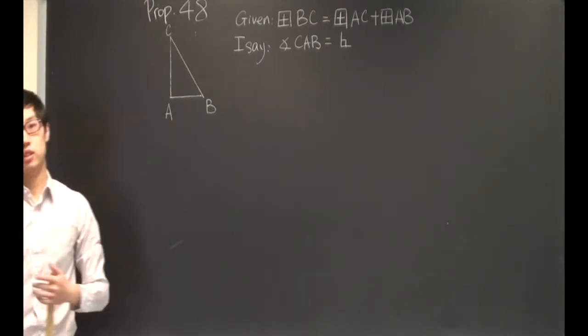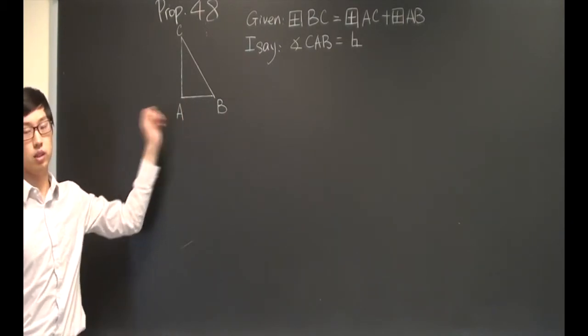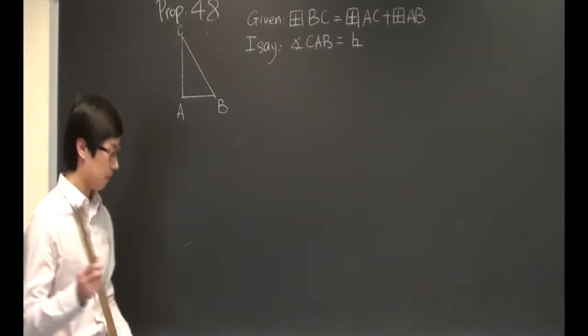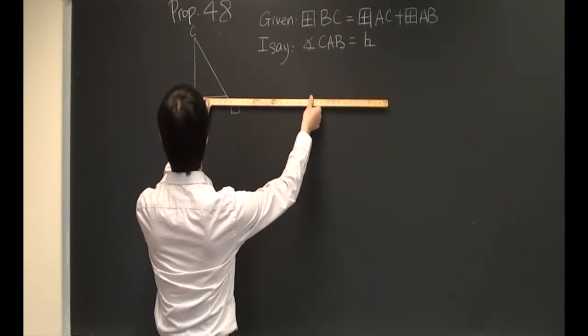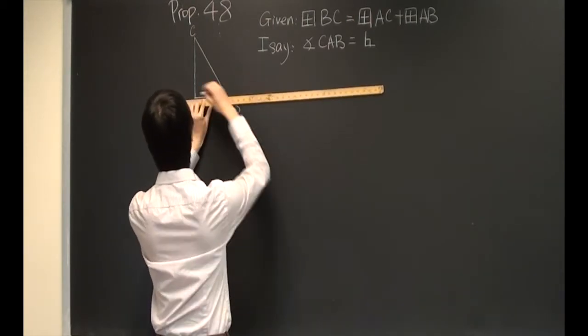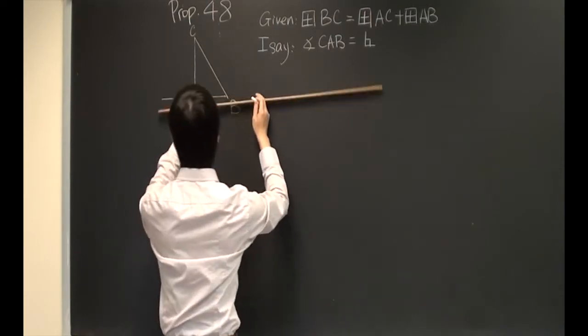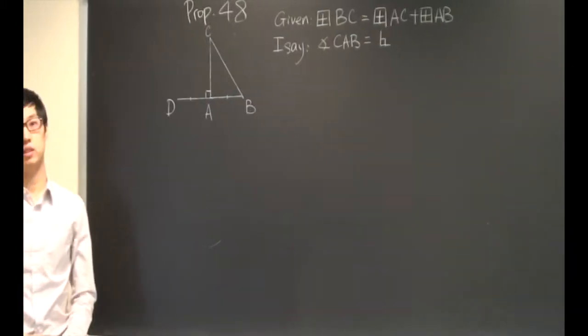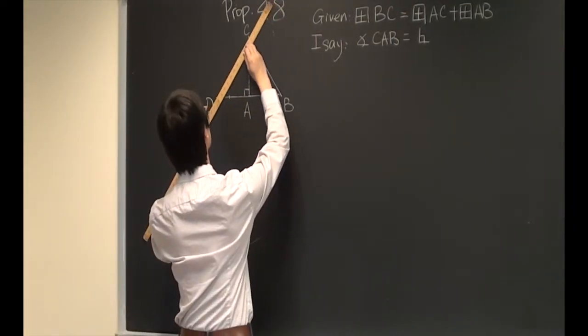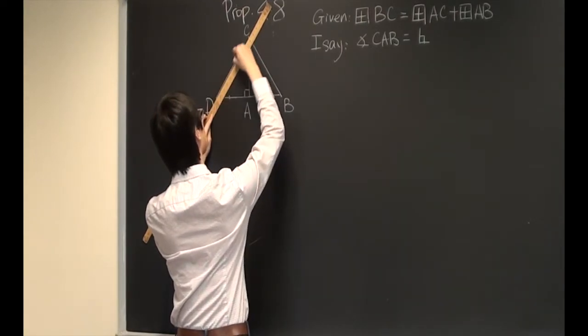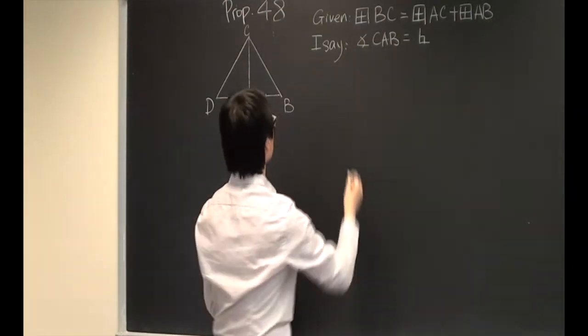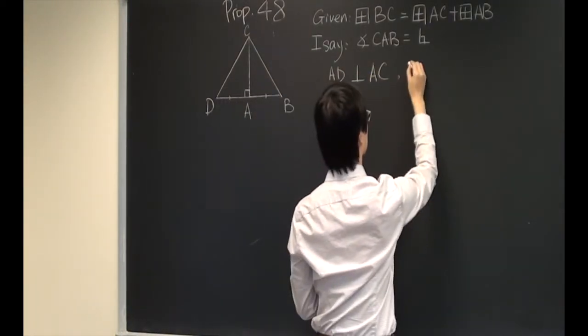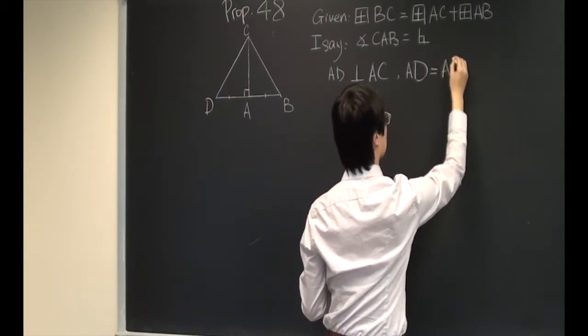First, I'm going to construct a line from point A to D which is perpendicular to AC, and also AD is equal to AB. And then complete triangle CAD.